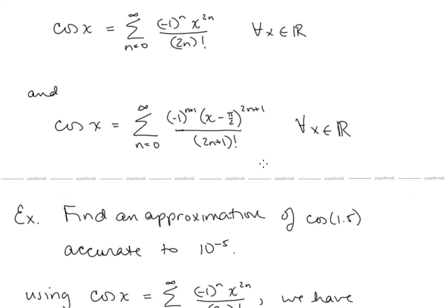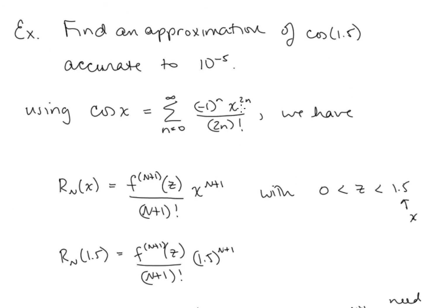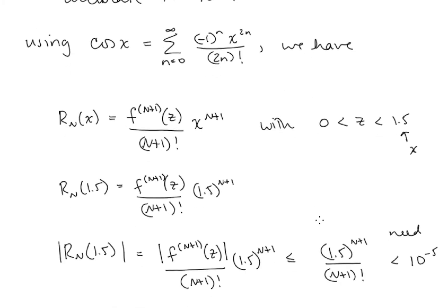Let's approximate cosine of 1.5 with accuracy to 10 to the negative 5th. Remember we are evaluating in radians, so 1.5 is close to pi over 2. We'll make this approximation using Taylor polynomials for both series. Centered at x equals 0, the remainder term involves z between 0 and 1.5. Since the derivatives of cosine are sines or cosines, in absolute value they are bounded by 1, so we need 1.5 to the (n+1) over (n+1) factorial to be less than 10 to the negative 5th.